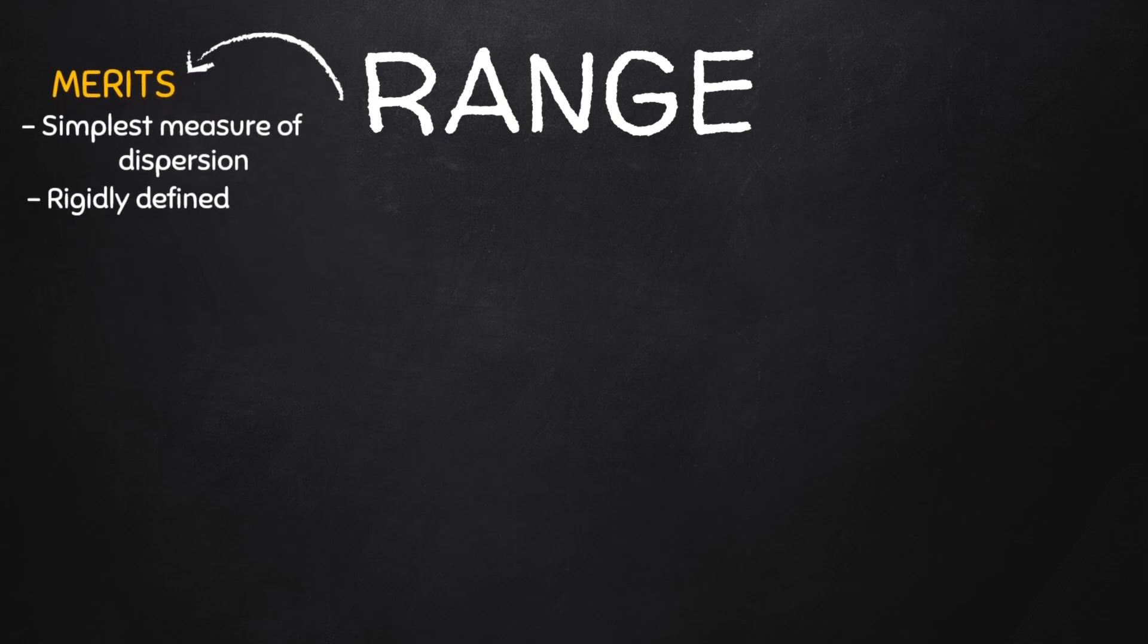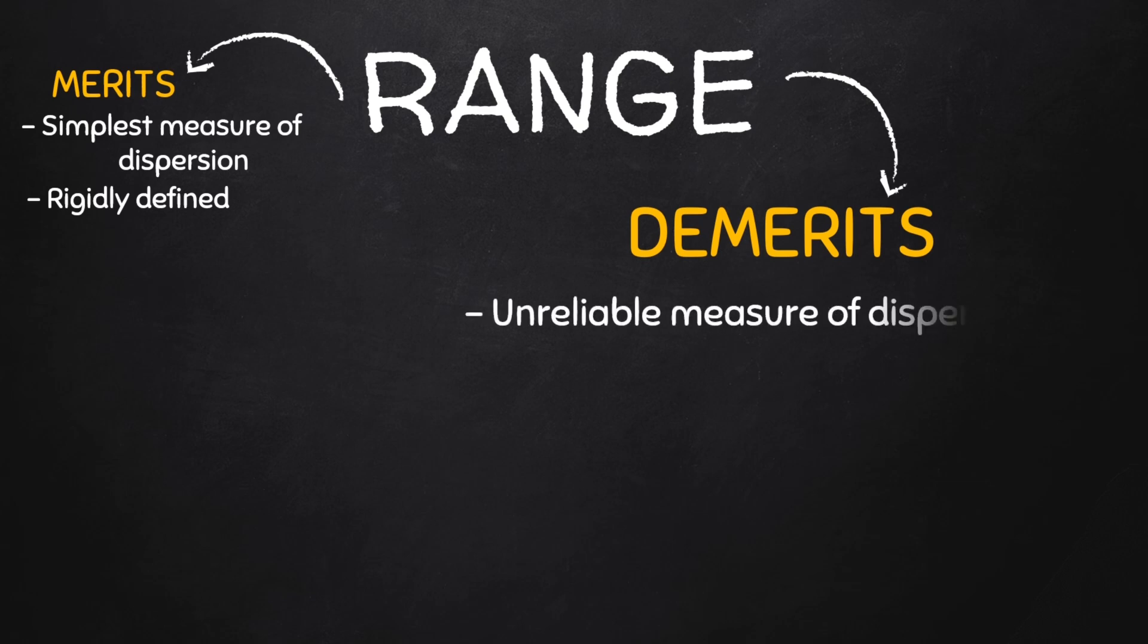Now the range has quite a number of demerits. The first is, the range is not a reliable measure of dispersion because it's based on only two observations, and not just any two observations, the two extreme observations which themselves are subject to change. So we can say the range is affected by extreme values.